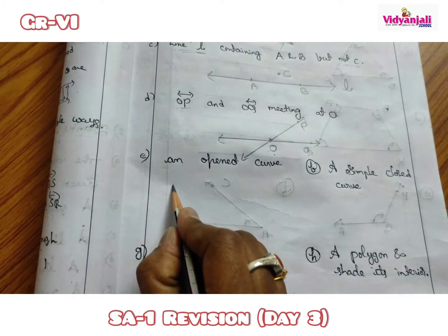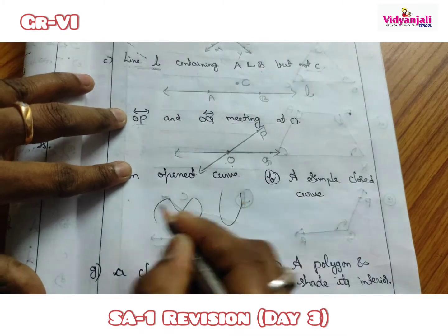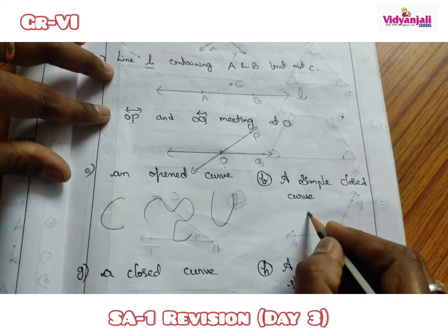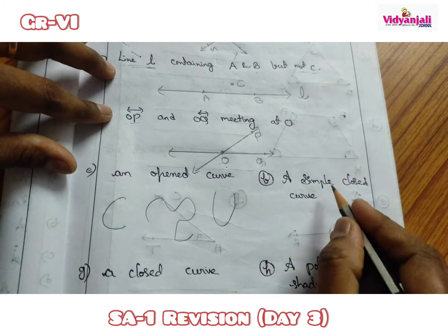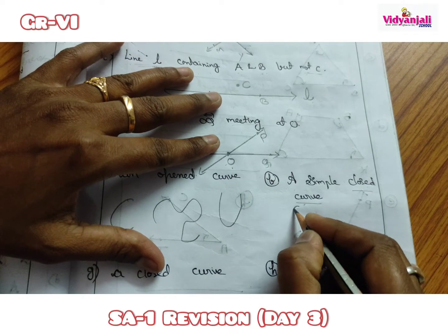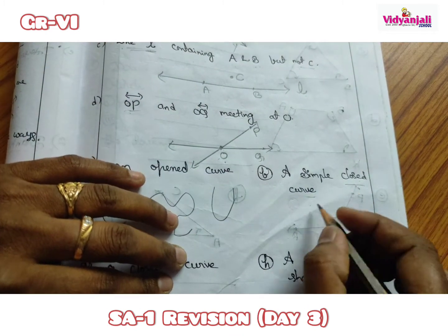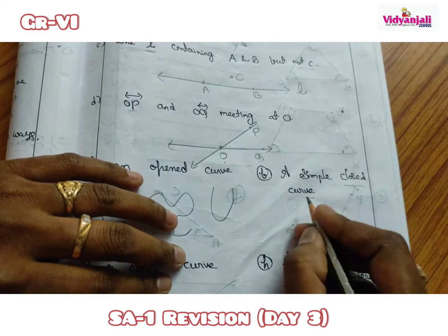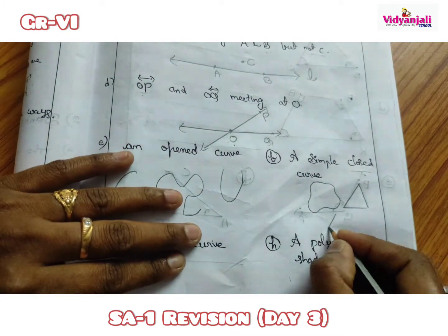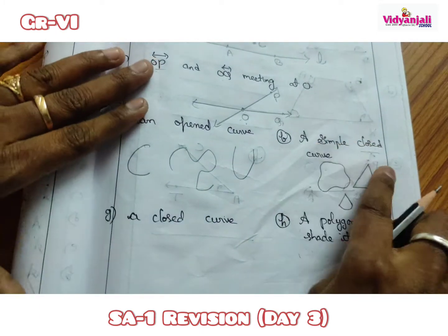Next: an open curve — draw any curve that is open. A simple closed curve is a closed curve that does not intersect itself. If a curve crosses itself, it is not a simple closed curve. You can draw shapes like an oval or any closed non-self-intersecting figure.